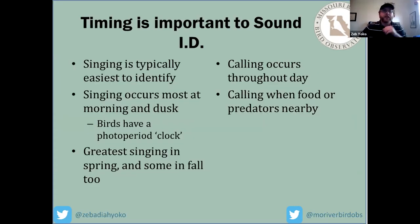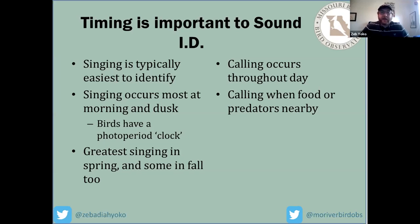To wrap up my section: singing is typically easier to identify but it is seasonal. Singing occurs mostly at dawn and dusk because birds have a photoperiod clock — at these times they tune into the breeding season or prepare for migration. The greatest singing is in spring, but because the photoperiod is similar, there's quite a bit of singing in fall too. Calling can occur throughout the day — especially when food or predators are nearby — so it's not as specific as song, but the calls are much shorter and typically harder to ID. With that, I'll pass it to Ethan to talk more about song ID.